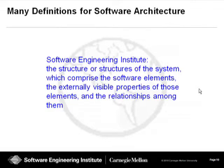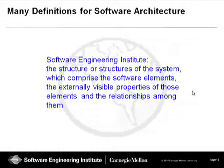We like this definition because it sticks with the very basics of what we think a software architecture is. A software architecture is the structure or structures of the system, which comprise the software elements, the externally visible properties of those elements, and the relationships among them.